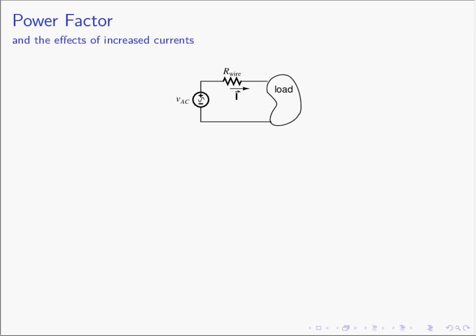There's a consequence that's maybe not obvious until you stop and think about it. Let's make the problem a little more realistic. Our load corresponds to your house, industrial facility, or wherever you're working, and the rest of the circuit is a simple model of how the energy gets to you. The voltage source is the power generation plant, and the resistance in this diagram represents the distribution wires—quite large in diameter but also long. We'll just say one ohm to keep the math simple.